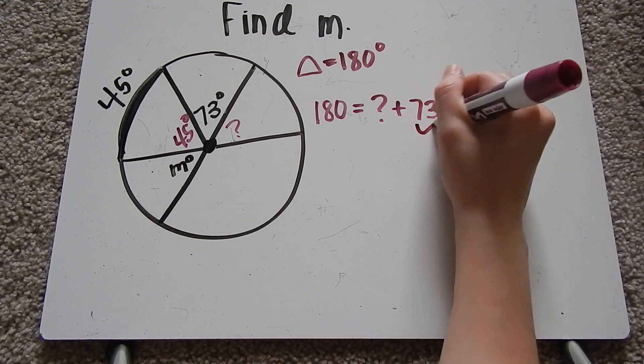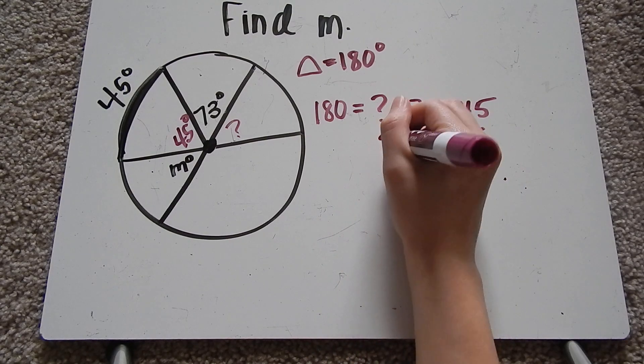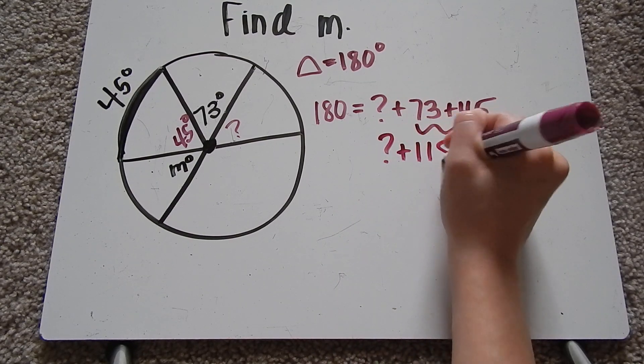So I first want to combine like terms there. I have 73 plus 45. I get question mark, that turns to 118.